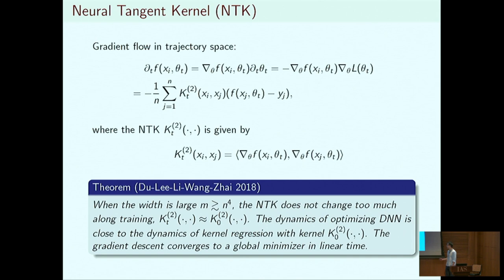This is the same as kernel regression with kernel K_0. In the regime where the width m is bigger than n to the power 4, people can prove that gradient descent for both dynamics converges to the global minimizer. Thanks to these results, we now have a pretty clear understanding of over-parameterized networks.